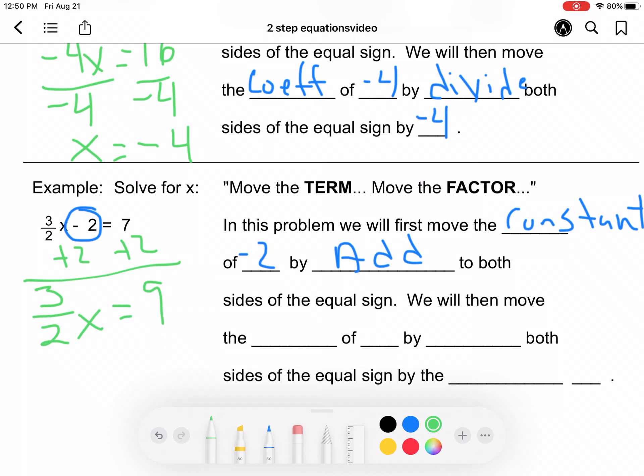Now this is going to be a little bit different. We will then move the coefficient of 3 halves by, okay, now here, I have a fraction, so I still am going to divide. But we also know that when we divide by a fraction, we also multiply by the reciprocal.